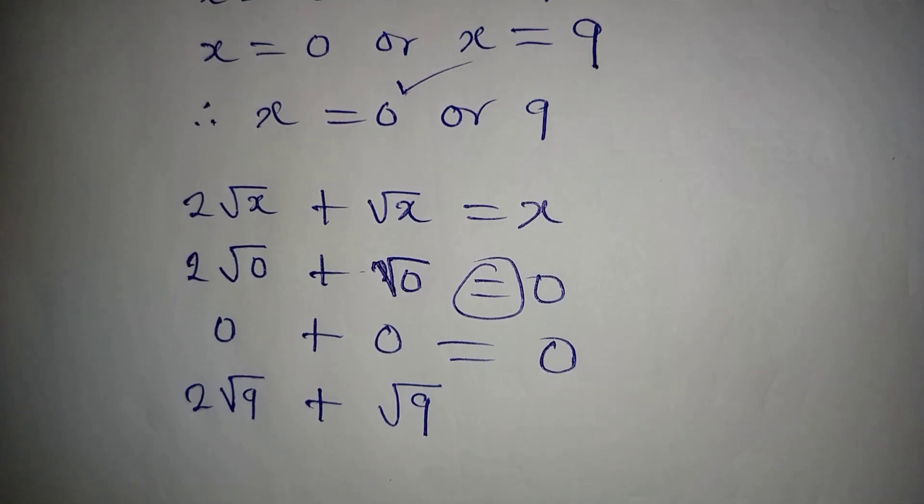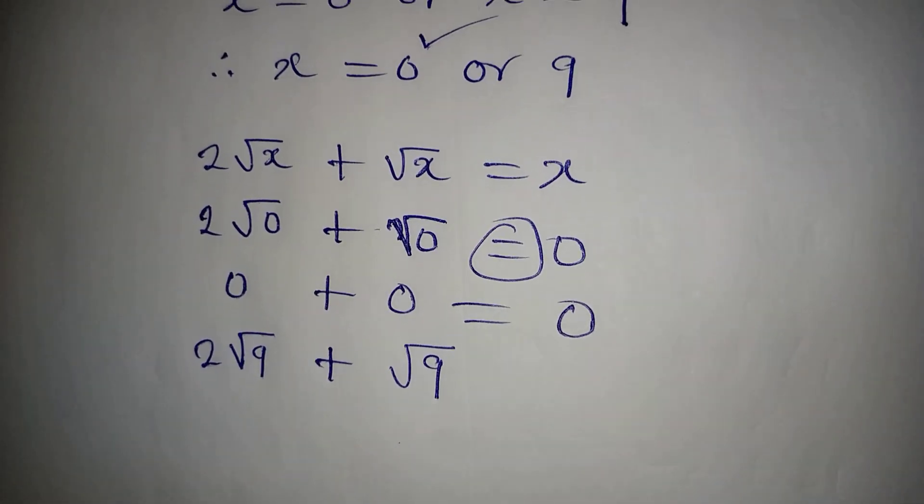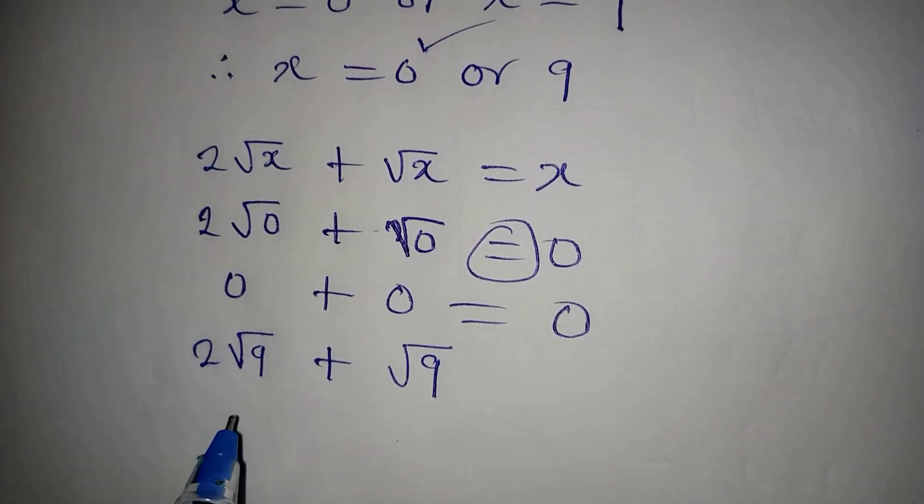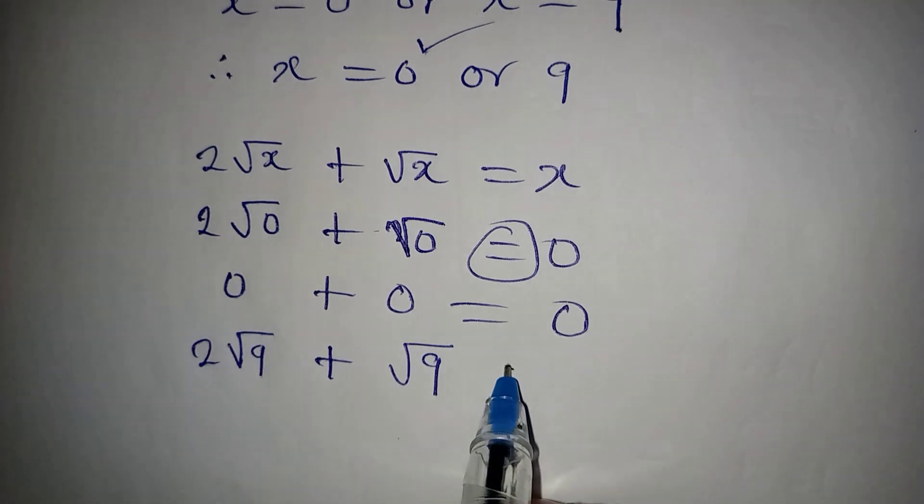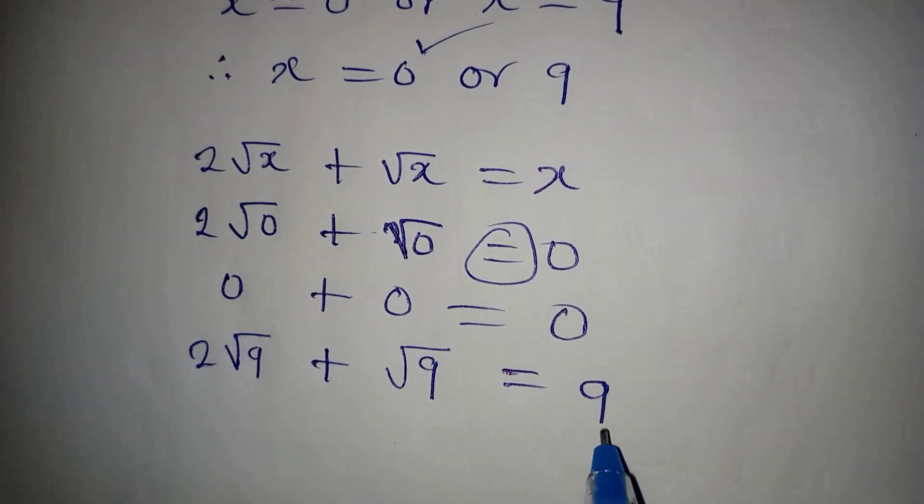Now this is very simple because 9 is a perfect square. √9 is 3, and this should be equal to 9 because we had x on the right.